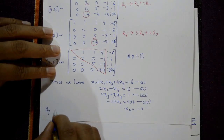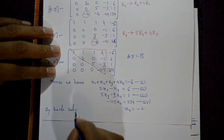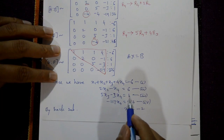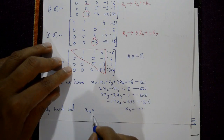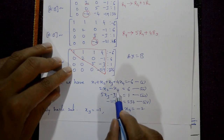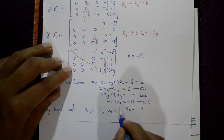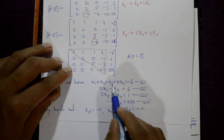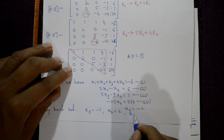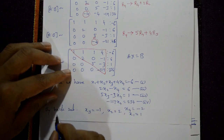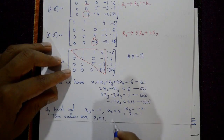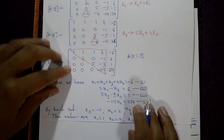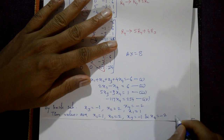By back substitution: substitute x₄ = -2 into the third equation to get x₃ = -1. Substitute x₄ into the second equation to get x₂ = 2. Substitute x₂, x₃, x₄ into equation 1 to get x₁ = 1. Thus the solution is x₁ = 1, x₂ = 2, x₃ = -1, x₄ = -2.